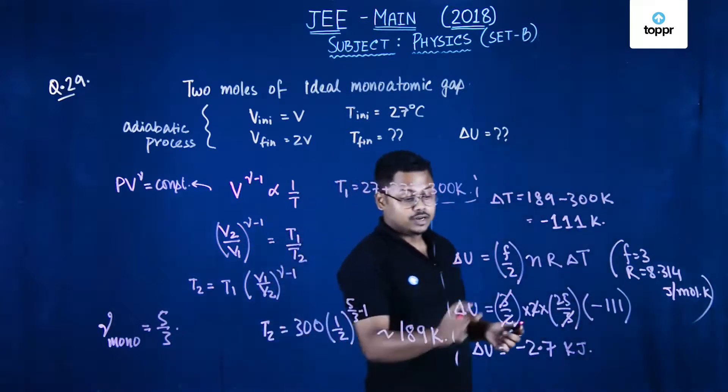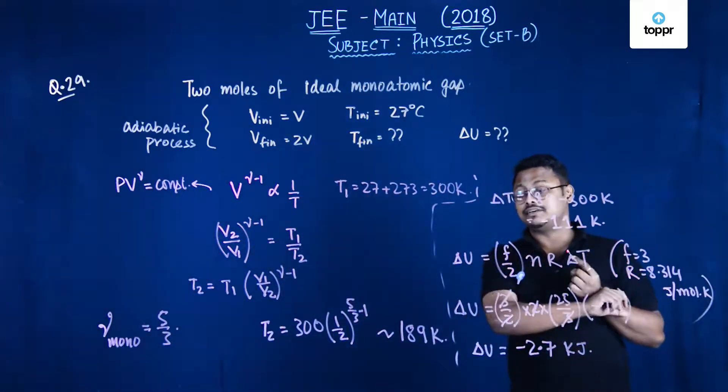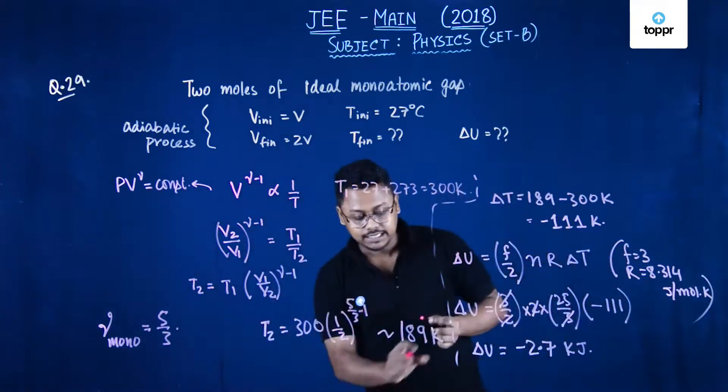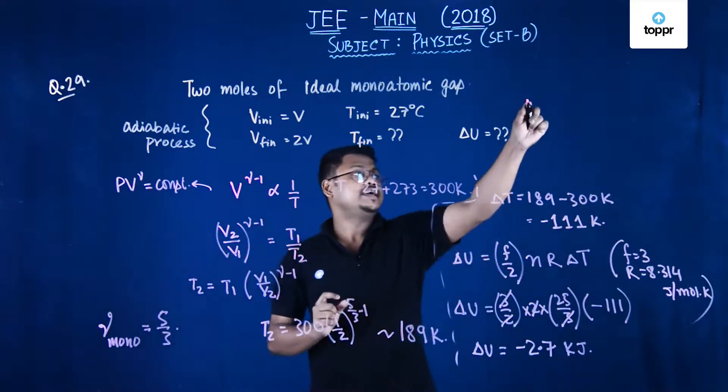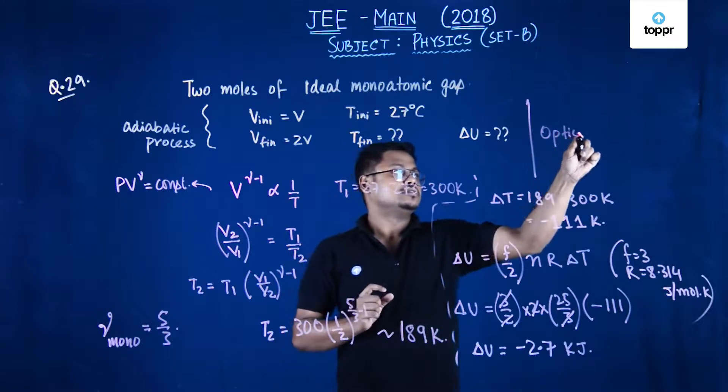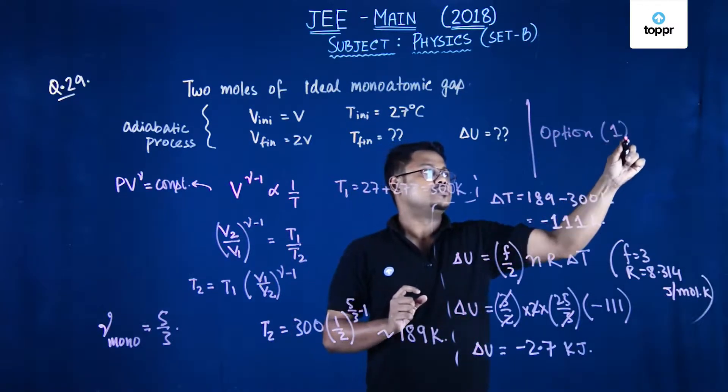So the value of delta U will come about minus 2.7 kilo joule and the final temperature will come 189 Kelvin. So the correct answer is option 1.